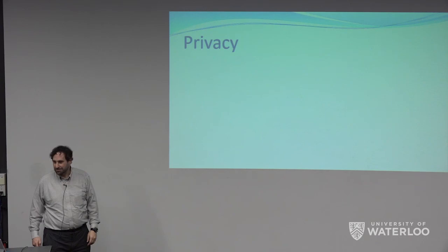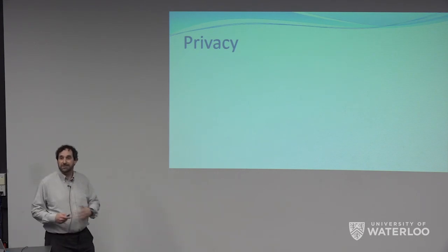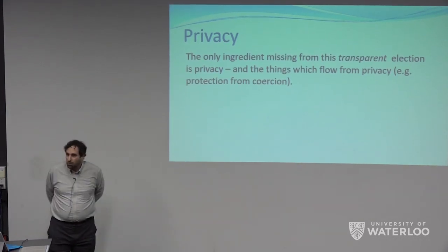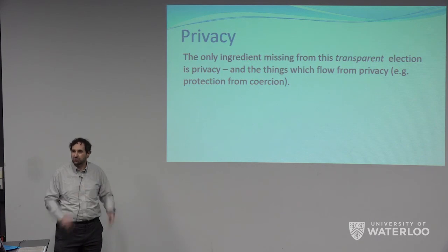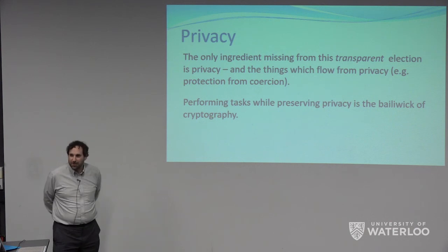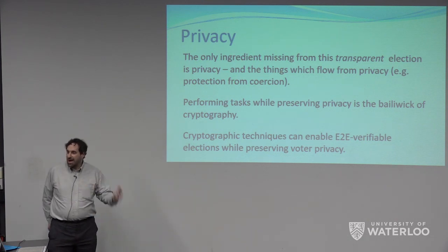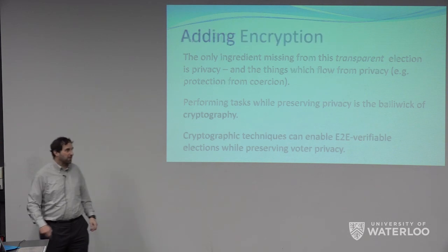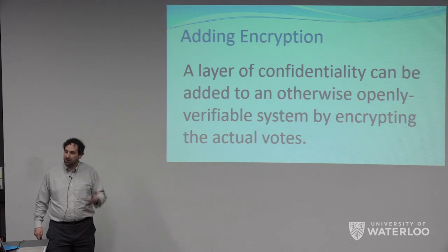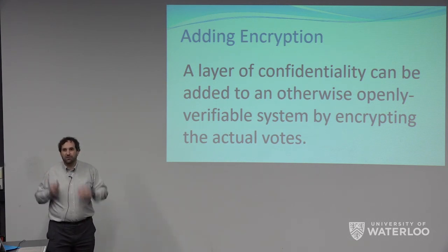But what about privacy? We want privacy in elections. Vote-buying and coercion were endemic in the 19th century. So we need privacy — and it turns out that what I just showed you, privacy is pretty much the only thing missing in a good election. We have the tool of cryptography. Cryptographic techniques can be used to add a layer of protection — make an election system end-to-end verifiable. So what we do is add a layer of encryption, a layer of confidentiality.